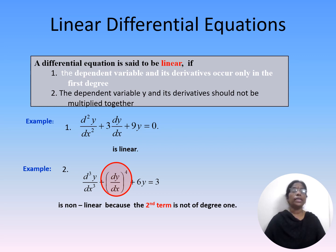A differential equation is said to be linear if it satisfies two conditions: namely, the dependent variable and its derivatives occur only in the first degree, and the dependent variable y and its derivatives should not be multiplied together.